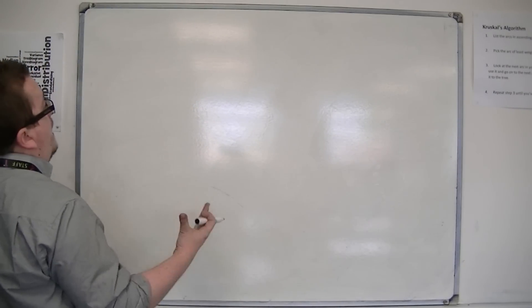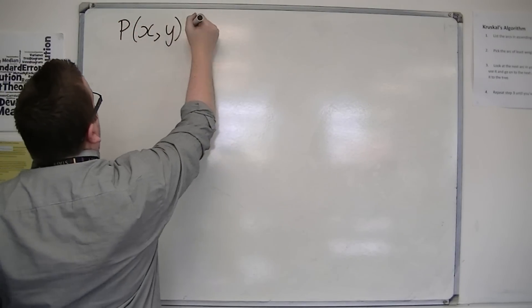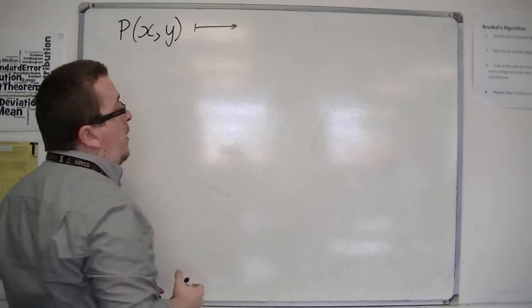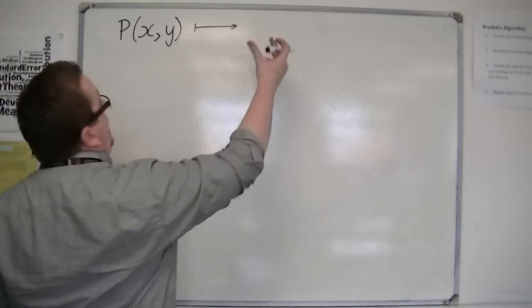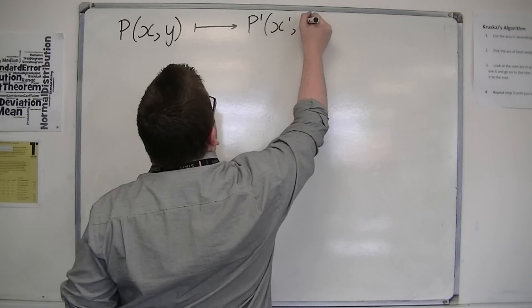If you want to map point P with coordinates x, y to another point, so let's say P prime, and that would be x prime, y prime...